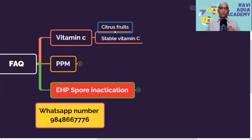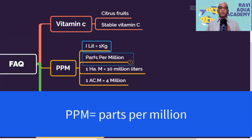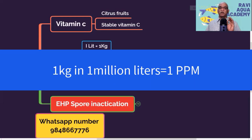Coming to PPM calculation — please keep in mind: the weight of 1 liter of water is equal to 1 kg. PPM means parts per million; 1 ppm means 1 part in 1 million. For example, if you take 1 million liters (10 lakh liters) of water and add 1 kg of chemical, that is 1 ppm — 1 part in 1 million parts.